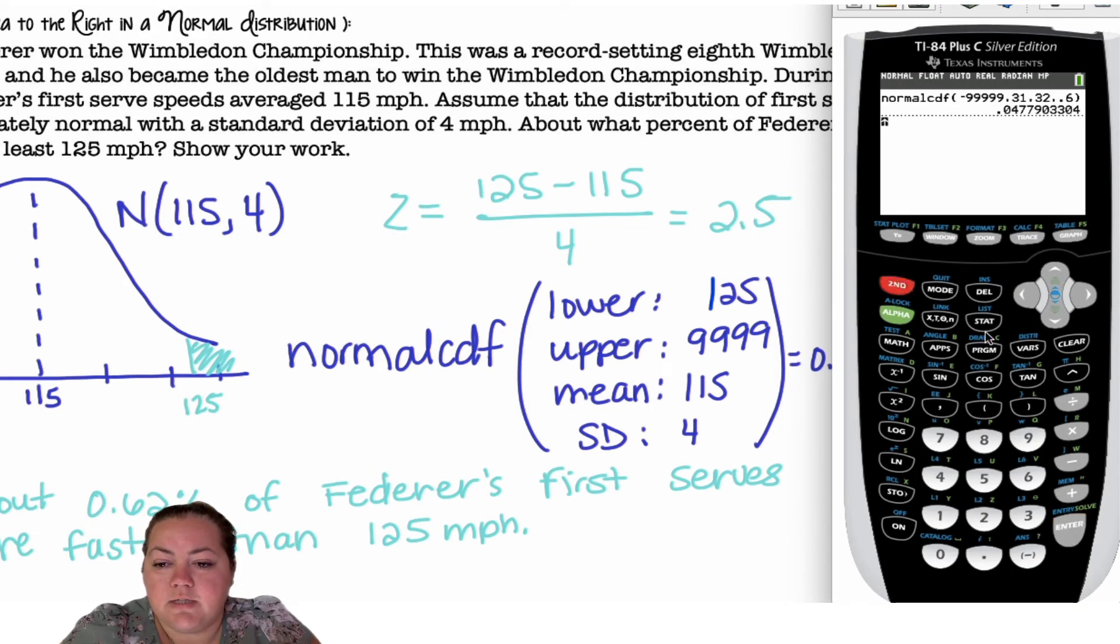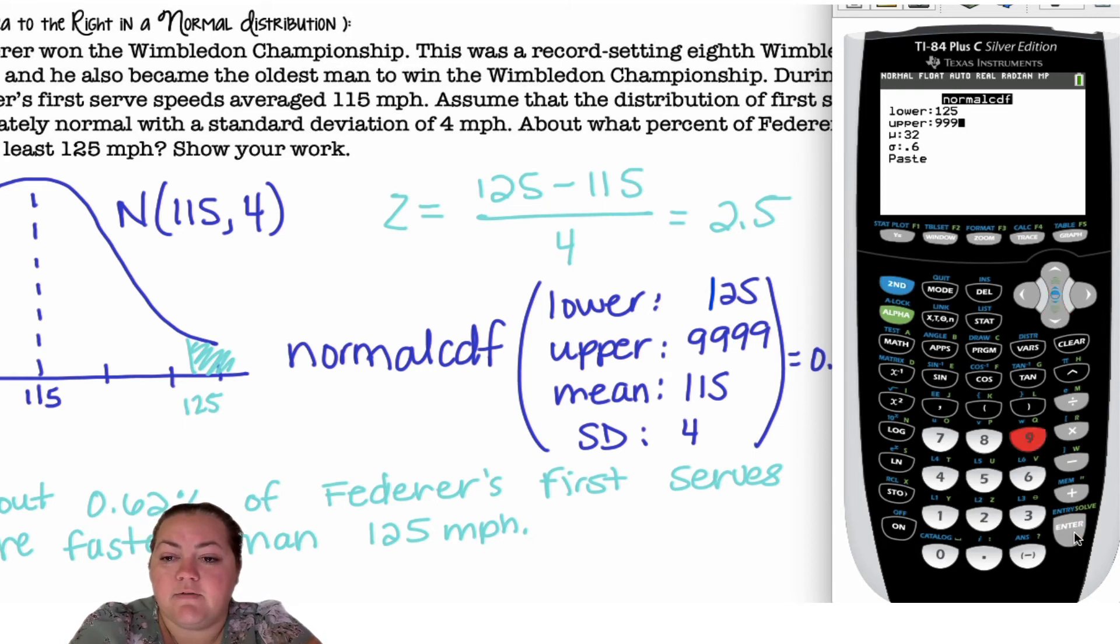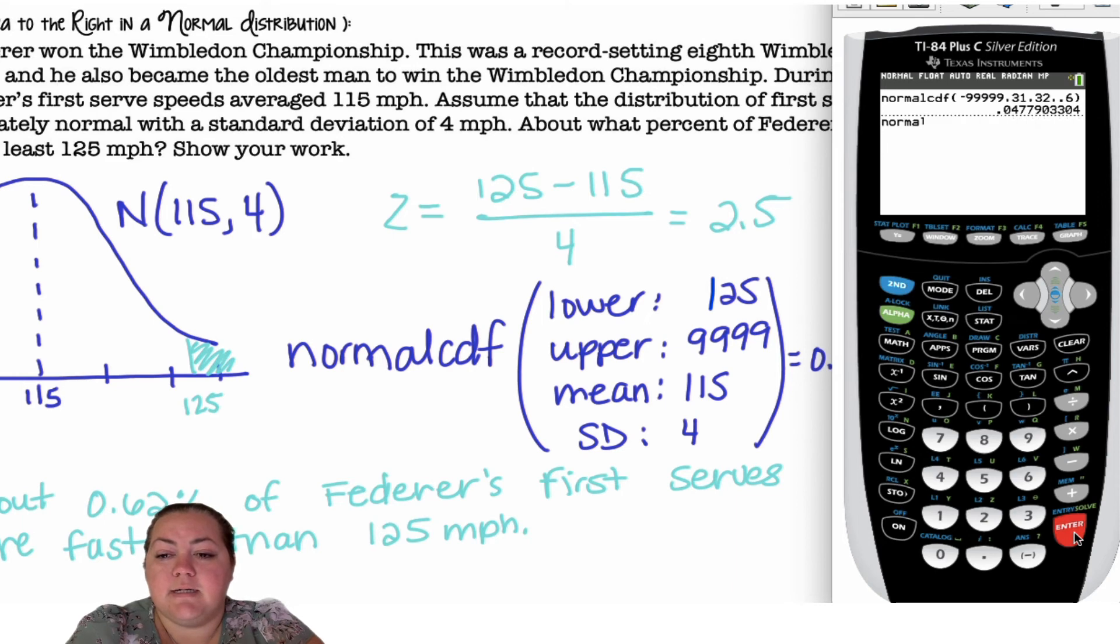So we're going to go to second VARS, which is our distribution menu. Normal CDF, which is the second option down. My lower bound is 125. My upper bound is positive infinity. So I'm going to put a bunch of nines, positive. 115 is my mean, and 4 is my standard deviation. I hit paste, enter, and I get my answer.